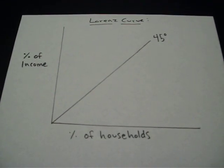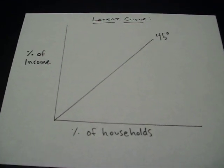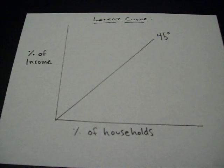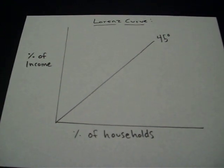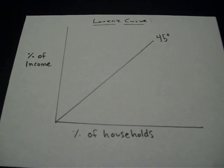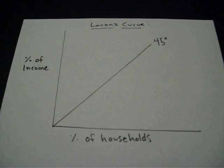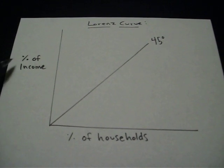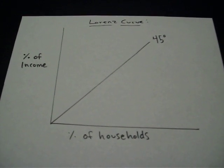Okay, this is called the Lorenz Curve. You'll probably be asked one or two questions on the AP test about this. So on the x-axis, I've got percentage of households. On the y-axis, I've got percentage of income.